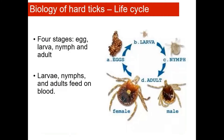Ticks undergo multiple stages in their life cycle. They start off as eggs, and then they hatch into larvae, which are very, very tiny. The larvae molt into nymphs and the nymphs molt into adults. So there are four life stages: egg, larvae, nymph, and adult. All life stages except the eggs feed on blood. Ticks need to take a blood meal from humans or animals in order to molt to the next life stage — it's their only source of food and they need it in order to survive and to grow.